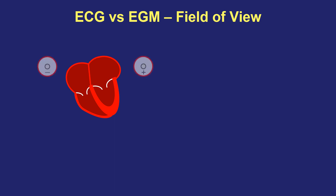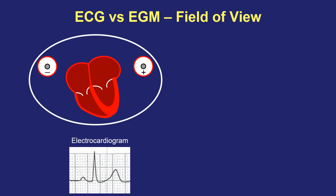First, I wanted to briefly distinguish between surface electrocardiogram recording and intracardiac electrogram recording. When we're recording a surface electrocardiogram, you have two electrodes — the anode and cathode — that are placed on the skin surface, both far away from the heart itself. The field of view of those electrodes encompasses the entire heart, so you will record the surface P-wave, all of the atrial activity, the surface QRS complex, all of the ventricular depolarization, and also the T-wave — the repolarization of ventricular tissue.